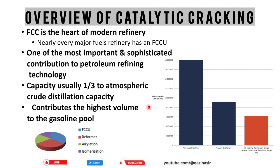FCC is the heart of the modern refinery — nearly every major refinery must have a fluidized catalytic cracking unit. Looking at this chart, the major roles in the refinery are atmospheric distillation, then vacuum distillation, then catalytic cracking units. FCC is one of the most important and sophisticated contributions to petroleum refinery technology. Its capacity is about one third of atmospheric distillation capacity, and it contributes the highest volume to the gasoline pool. After FCC, we have a reformer, alkylation unit, and isomerization unit.